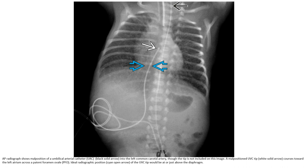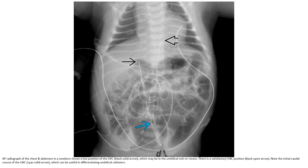Medial lateral radiograph showing a UVC tip positioned just at the cavoatrial junction. AP radiographs of the chest and abdomen in a newborn show low positioning of the UVC, which may be in the umbilical vein or umbilical recess. Also shown is a satisfactory UAC position, noting the initial inferior course of the UAC before it ascends in the aorta.